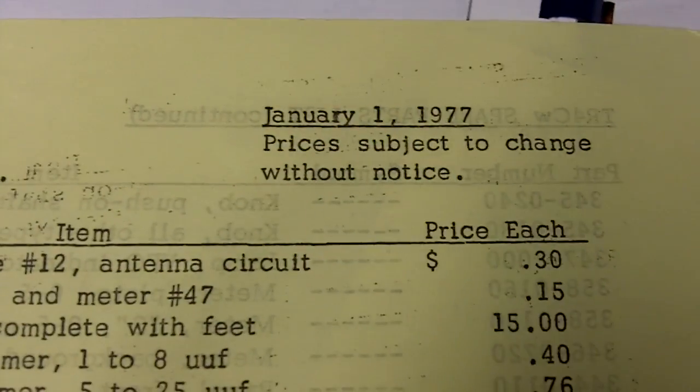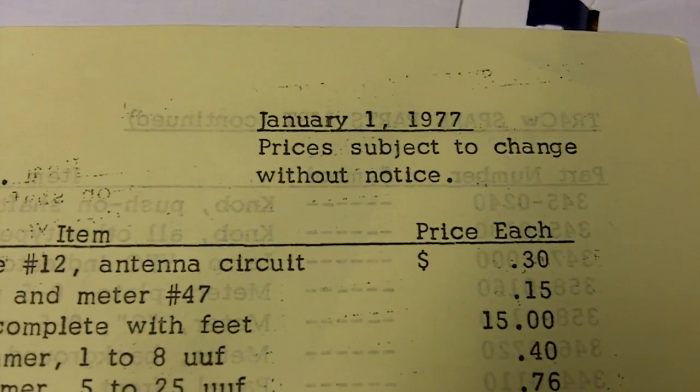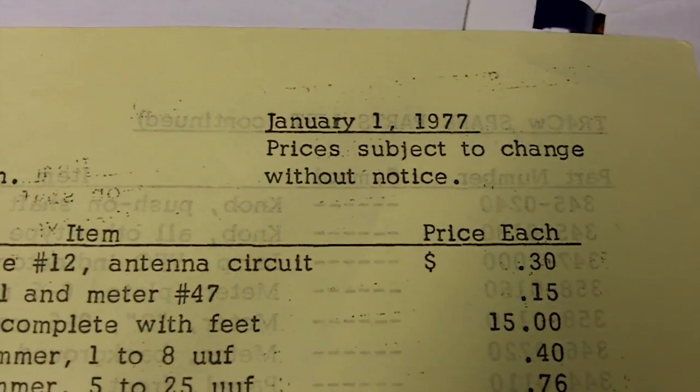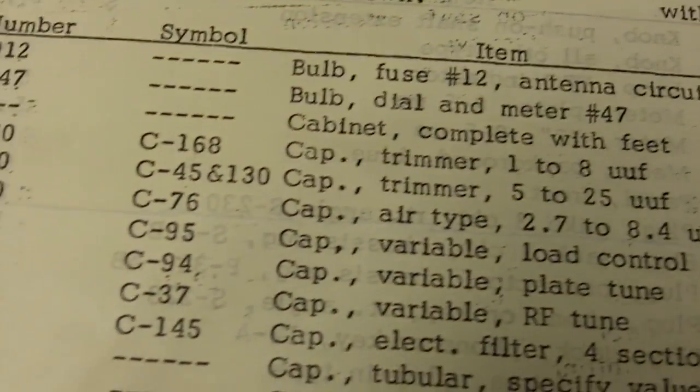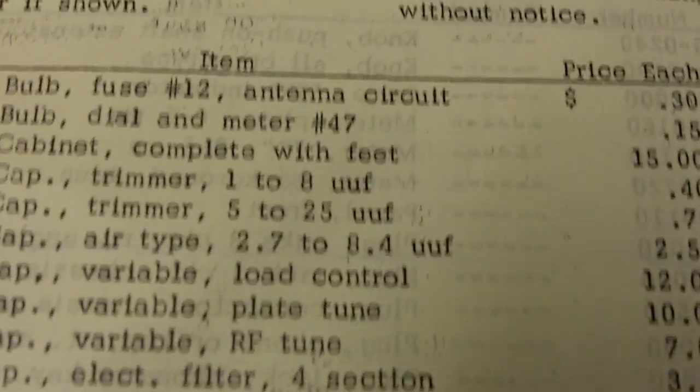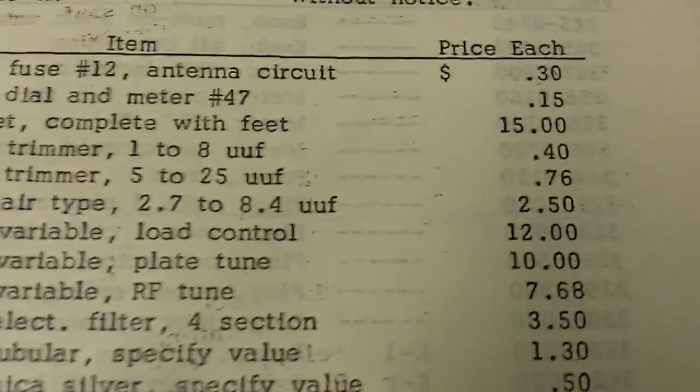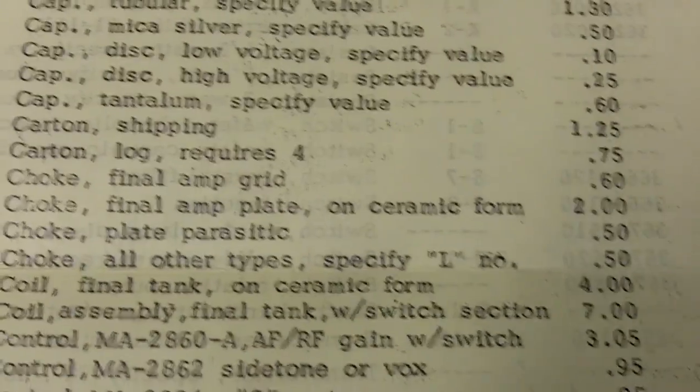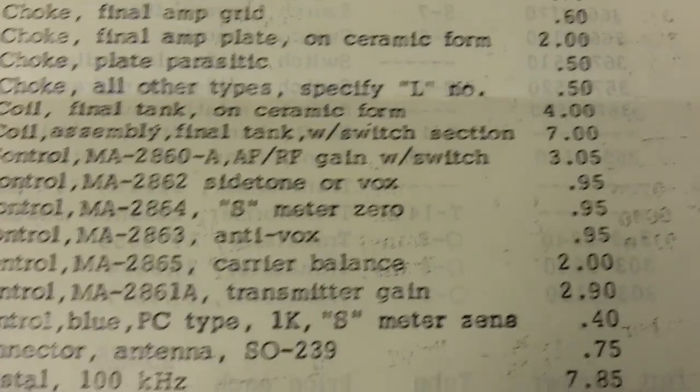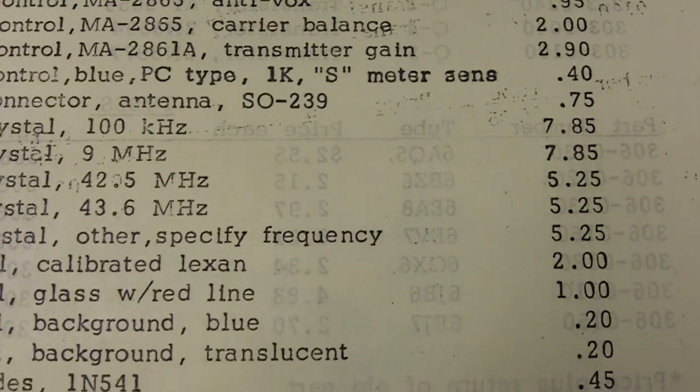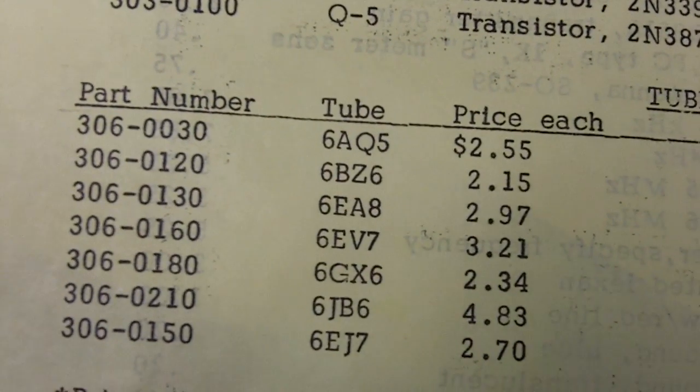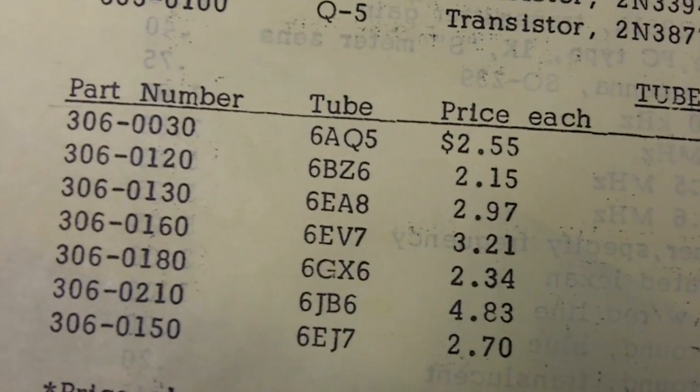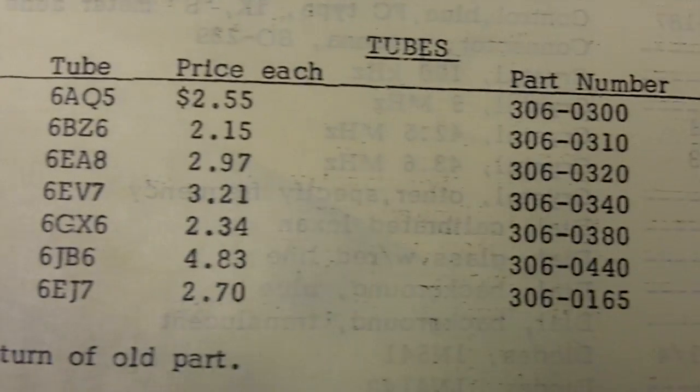This is kind of interesting I have a parts list from January 1st 1977 that came with the manual. You could order most of the parts needed for the radio to repair it and you can get a complete cabinet with feet 15 dollars. Look at those prices seem awful low now. Here's what you could buy the tubes for, two three four dollars.